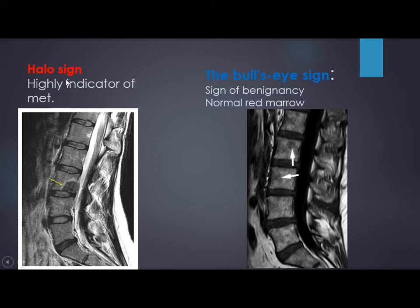Whenever there is a halo sign — lesions surrounded by a high signal curvilinear margin — it is a highly indicative sign of metastasis, on either T1 or T2. While the bulls-eye sign is a sign of benignancy, indicating red marrow. We see two lesions with hypo signal and a small hyperintense dot inside — this is not metastasis, this indicates a benign process.